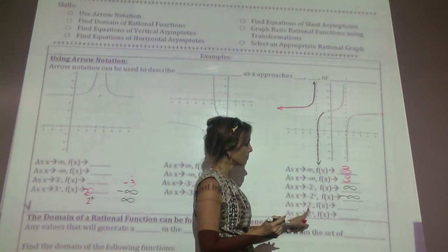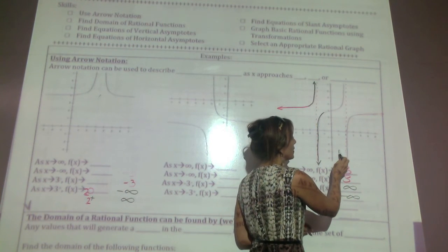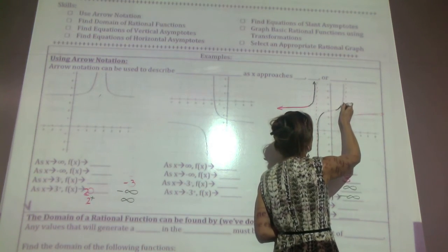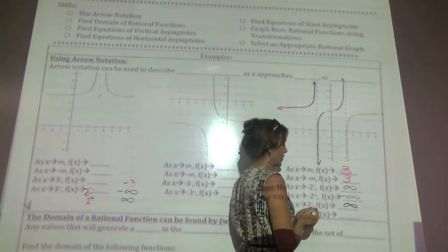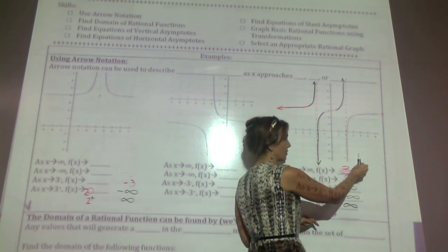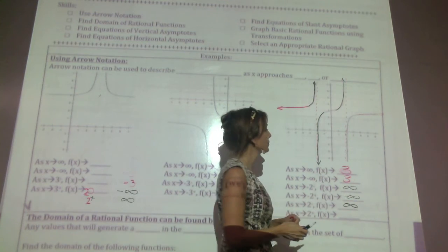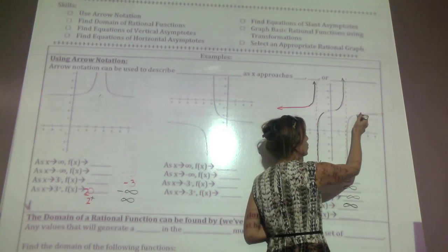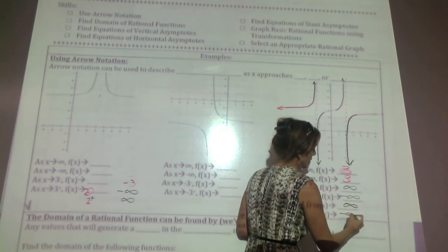As x approaches positive 2 from the left, I come over to x equals positive 2, move to the left, find the graph, and trace it towards positive 2 — we're going up towards positive infinity. And as x approaches 2 from the right, moving to the right of that vertical line and tracing the graph towards positive 2, that gives us negative infinity.